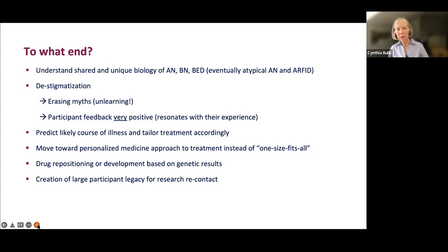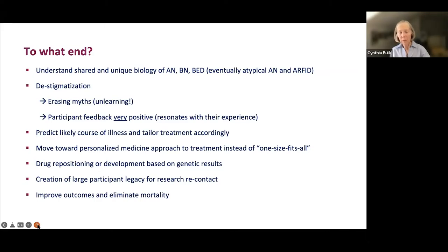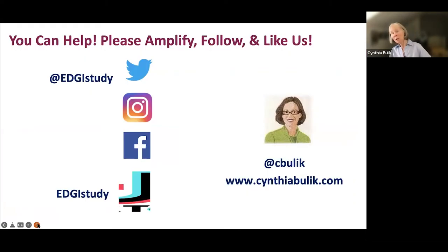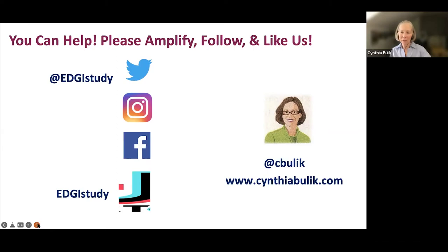We're creating a large global participant legacy for research recontact. We want to improve outcomes and ultimately eliminate mortality — mortality from anorexia nervosa is still inexcusably high. My teams include the Eating Disorders Working Group of the Psychiatric Genomics Consortium, the UNC CEED team, and the Karolinska CEDI team. I invite you all to amplify us and follow us on Twitter, Instagram, Facebook, and yes, even TikTok, to spread the word about EDGIE, boost participation, and find better ways to treat these disorders and eliminate mortality.